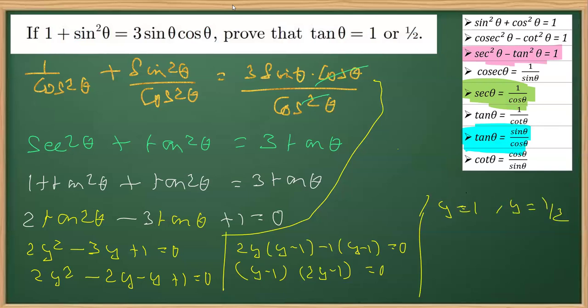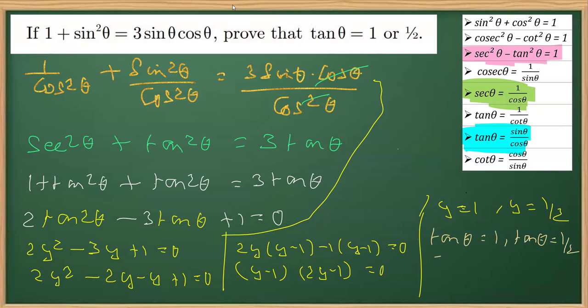Now, y is tanθ. So replacing y with tanθ, we can say tanθ equals 1, and from the other factor tanθ equals half. This is what we had to prove, and we have proved it.